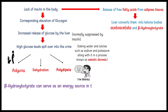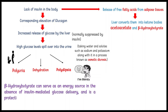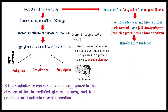The liver converts free fatty acids into ketone bodies — acetoacetate and beta-hydroxybutyrate — through a process called beta-oxidation. Beta-hydroxybutyrate can serve as an energy source in the absence of insulin-mediated glucose delivery and is a protective mechanism in case of starvation. The ketone bodies, however, have a low pKa and therefore turn the blood acidic, also known as metabolic acidosis.